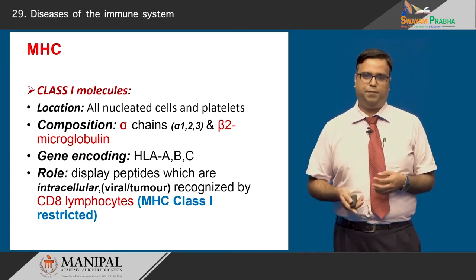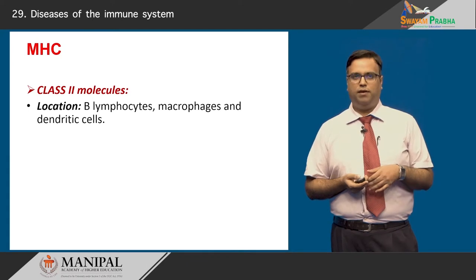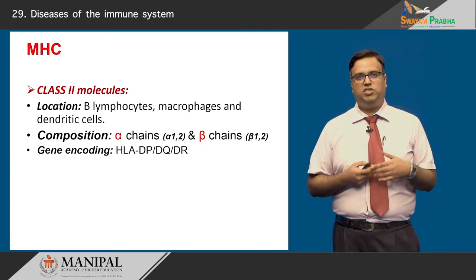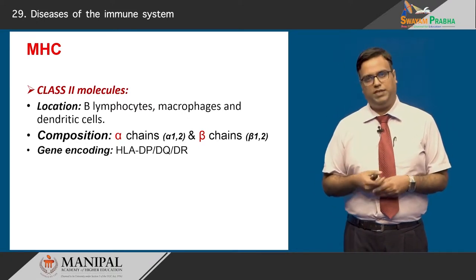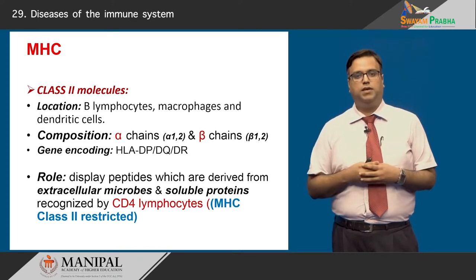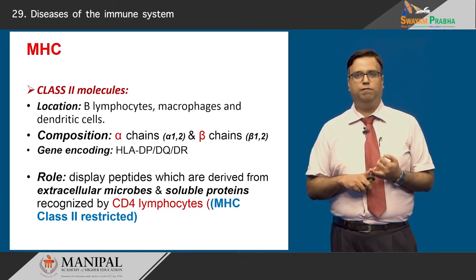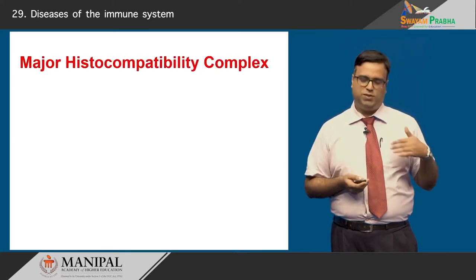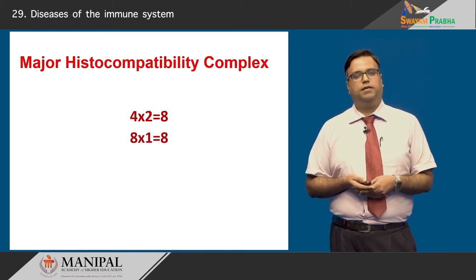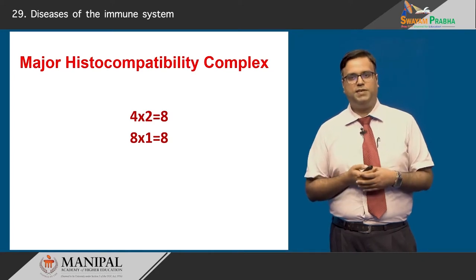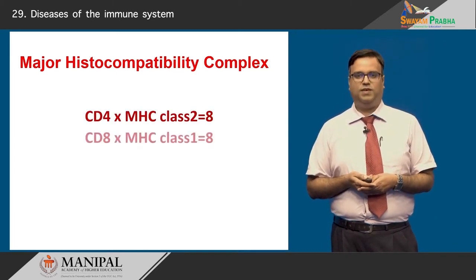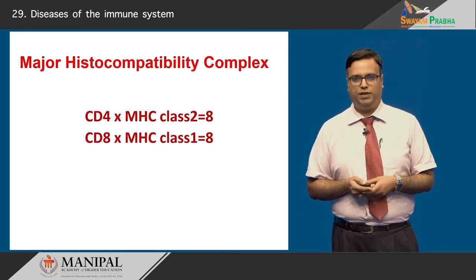In contrast, MHC class 2 molecules are located on B lymphocytes, macrophages, and dendritic cells, encoded by HLA-DP, DQ, or DR. Their role is to display peptides derived from extracellular microbes and soluble proteins, and they are recognized by CD4 lymphocytes — only when restricted with class 2. To reinforce: MHC class 2 restriction is associated with CD4 lymphocytes, and MHC class 1 restriction is associated with CD8 lymphocytes. A simple algorithm: 4 times 2 is 8, and 8 times 1 is 8 — meaning CD4 with MHC class 2 gives 8, and CD8 with MHC class 1 also gives 8.